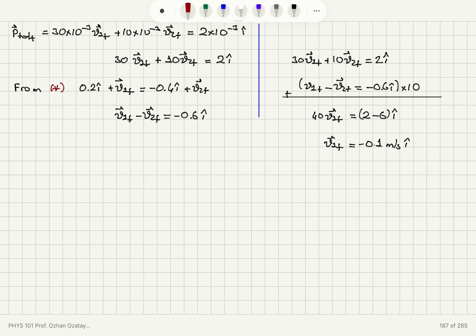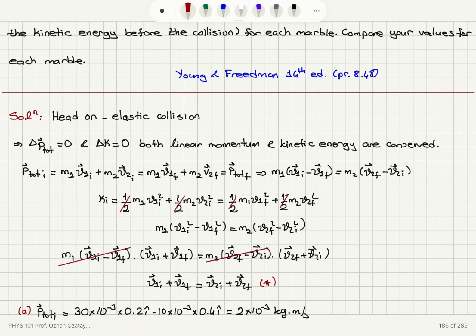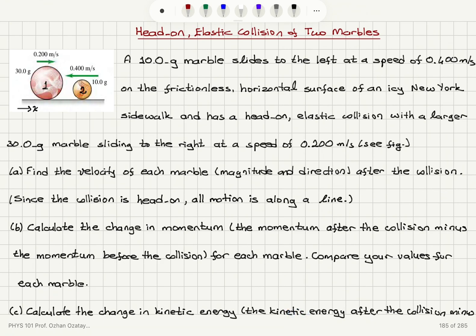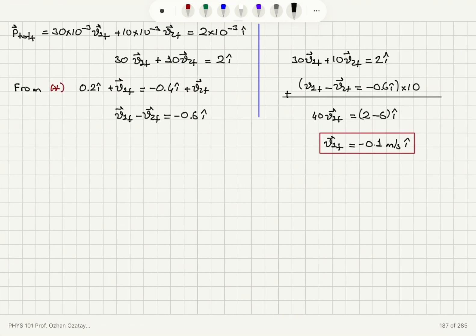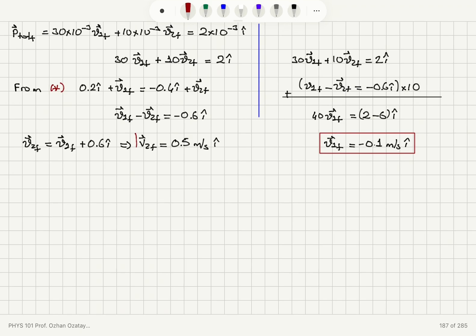This gives v1_final equals −4/40 equals −0.1 m/s î: magnitude 0.1 m/s in the minus î direction. This makes sense — marble 1 was moving toward marble 2 and now bounces back. Substituting into the elastic collision relation gives v2_final equals v1_final plus 0.6 î, so v2_final equals 0.5 m/s in the positive x-direction. Using conservation of kinetic energy and linear momentum simultaneously, we obtained the final velocities.